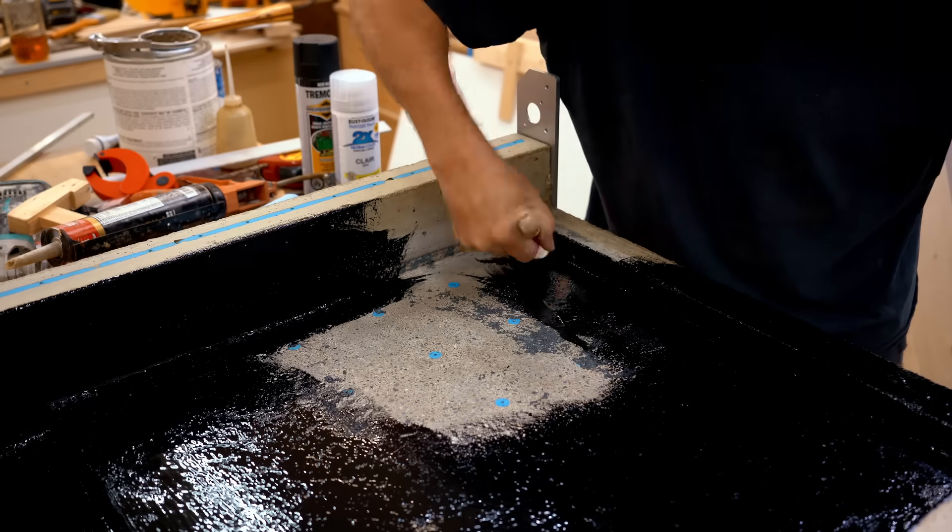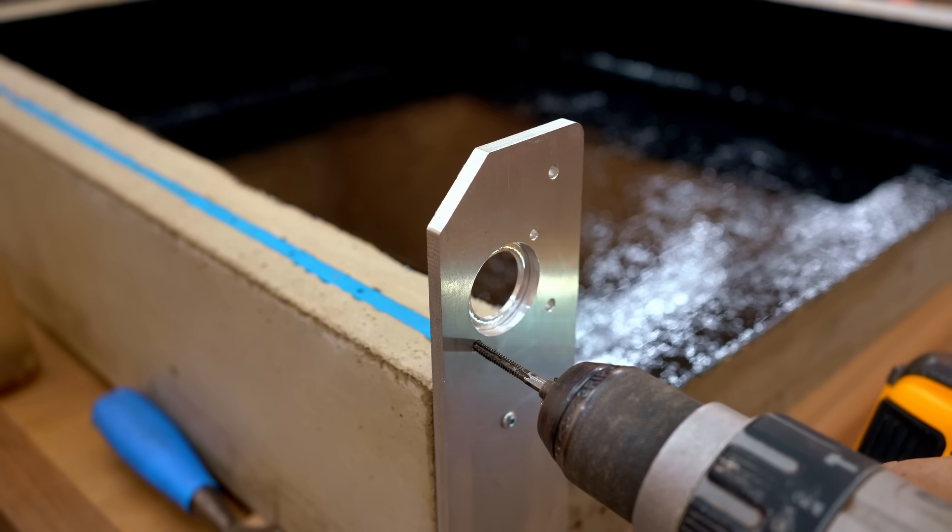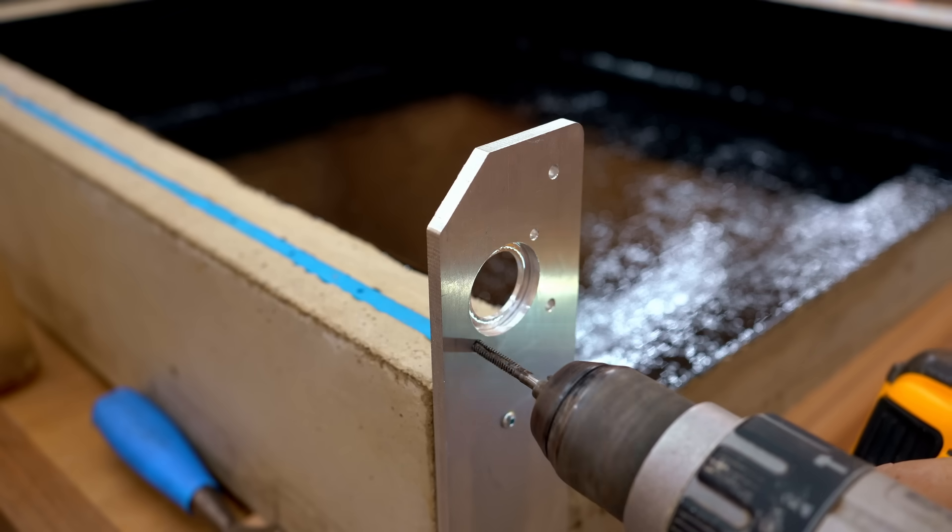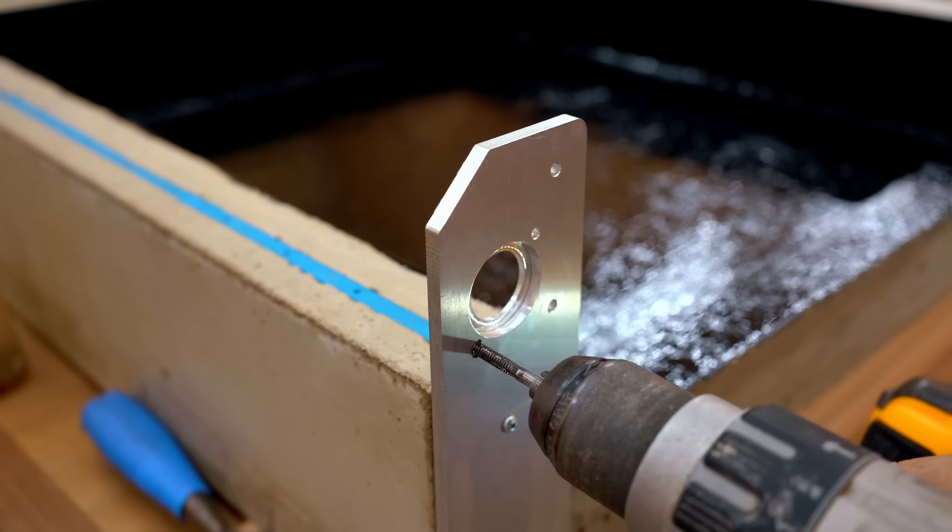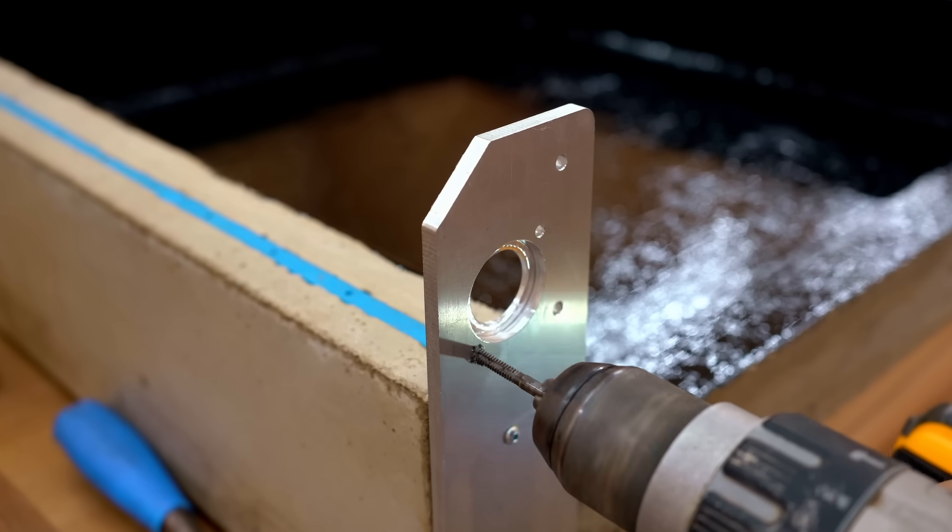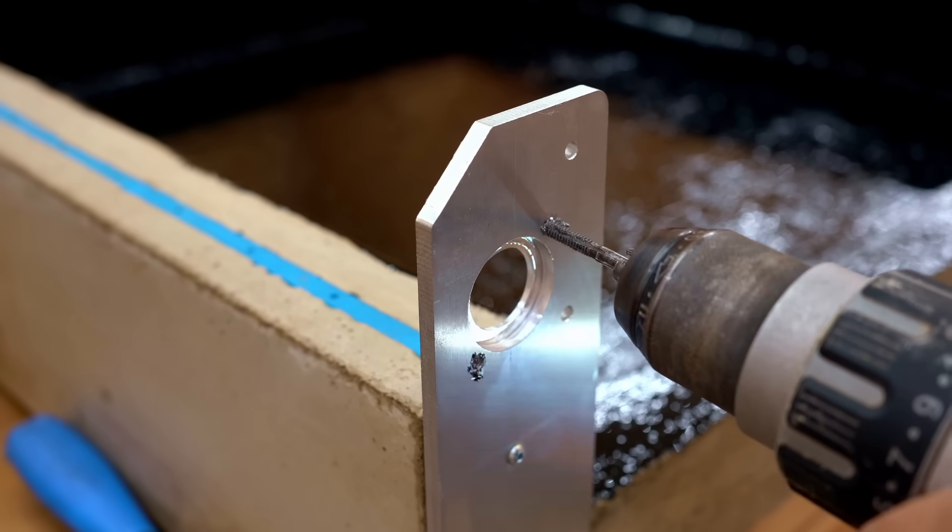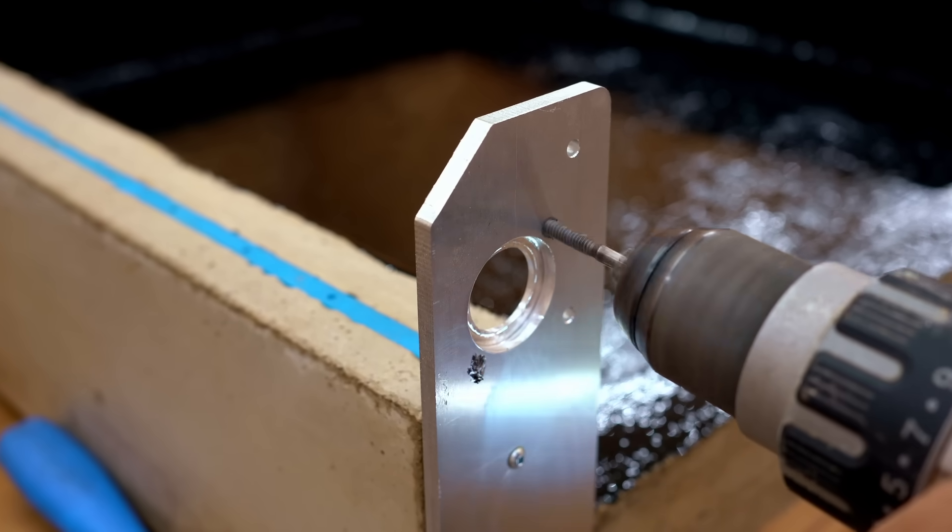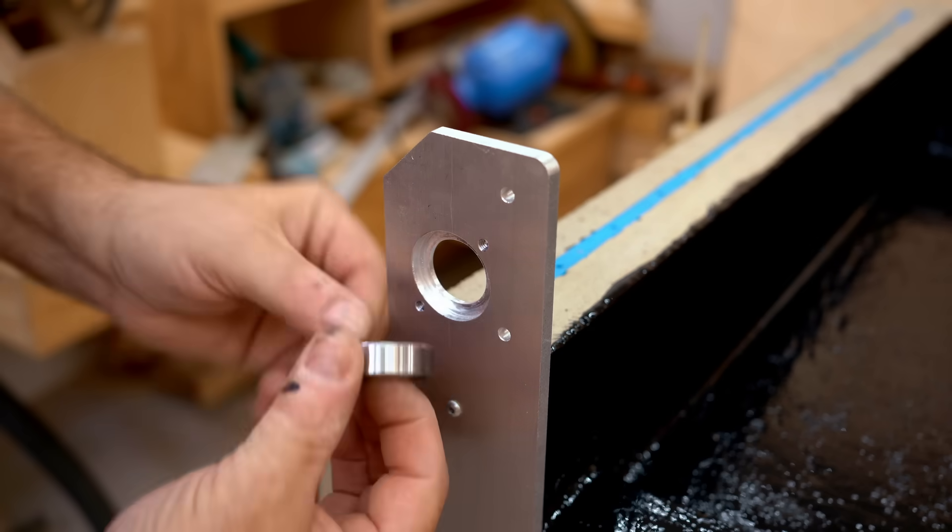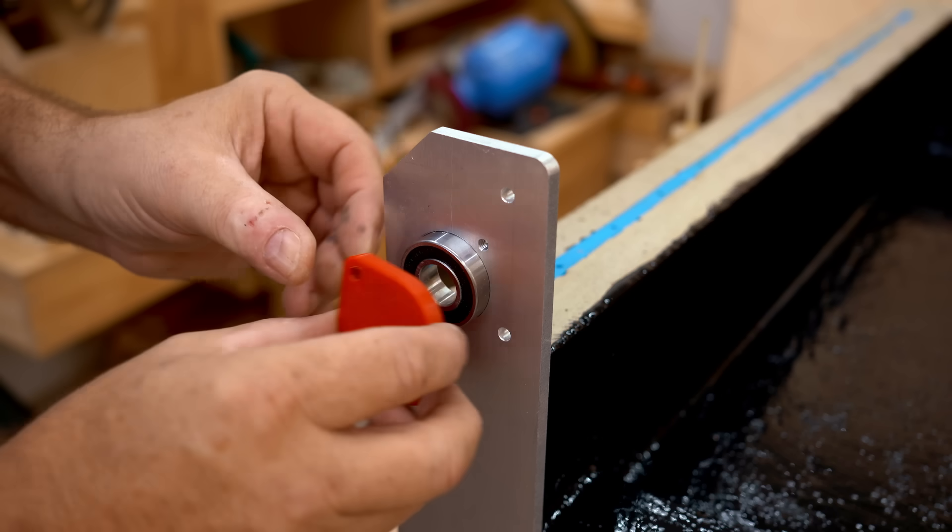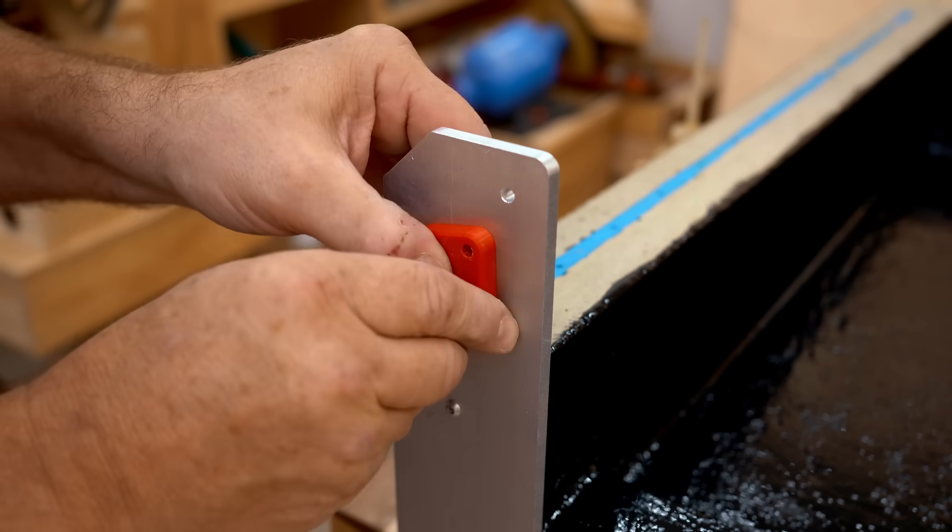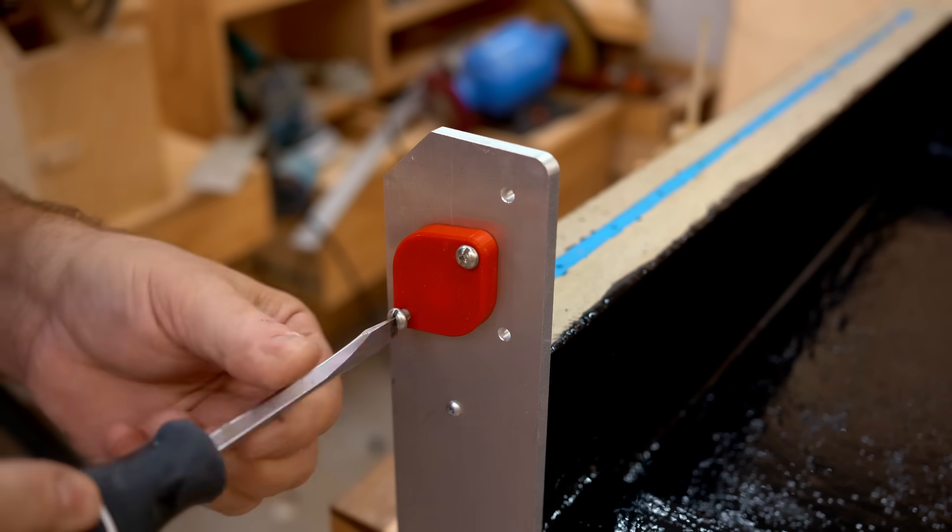So I got that done and while it was drying I started working on the aluminum uprights I installed in the last video. These are machined for the bearings that will support the lead screws for the y-axis, and two of these smaller holes need to be tapped so that I can screw on a cover that holds that bearing in place. The cover is just 3D printed.